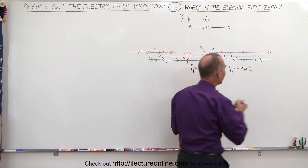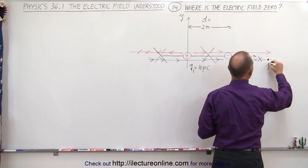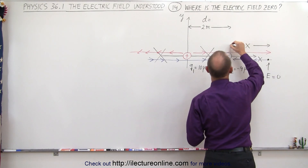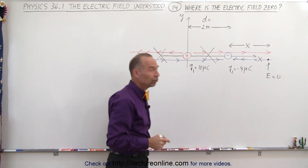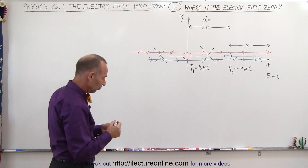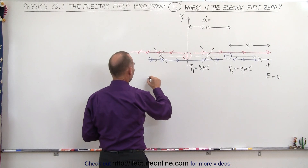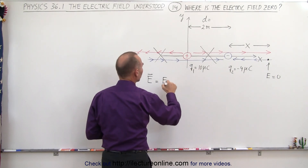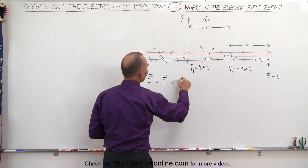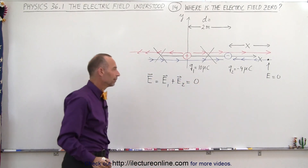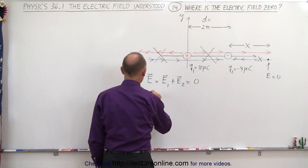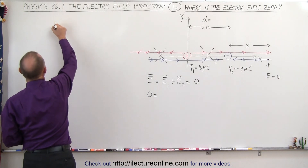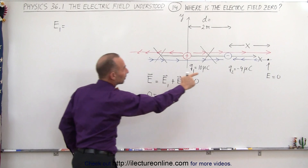We're going to assume there's some point to the right of the negative charge where the electric field is zero, and that it's a distance x away from the negative charge. We want to find what x equals. So we add up the two electric fields: the electric field from charge one added to the electric field from charge two should equal zero.